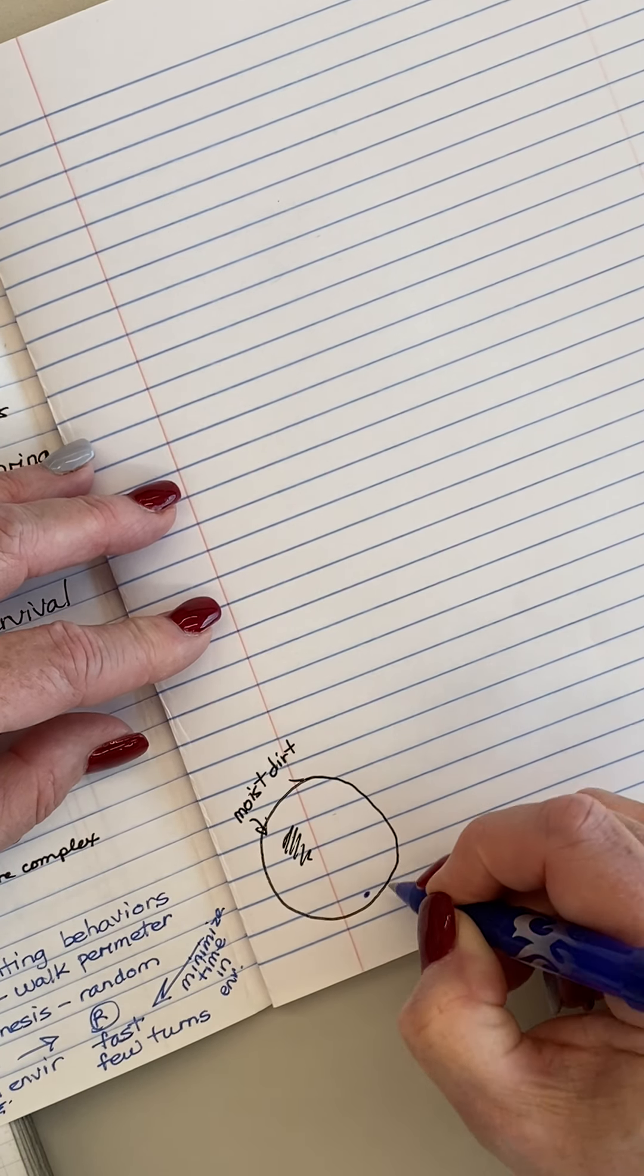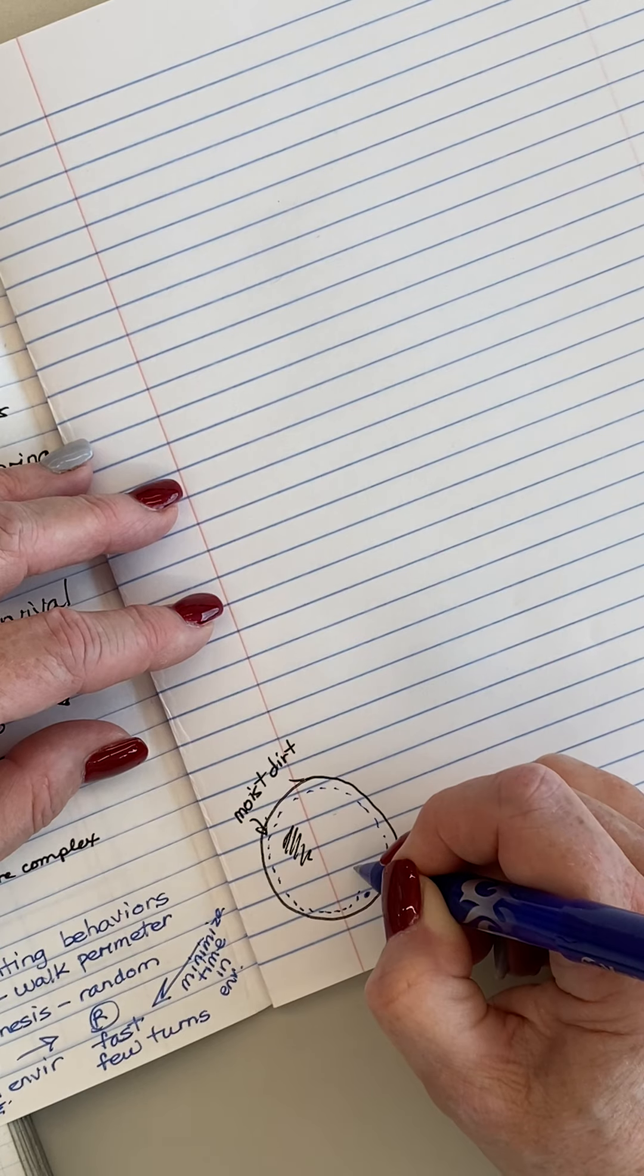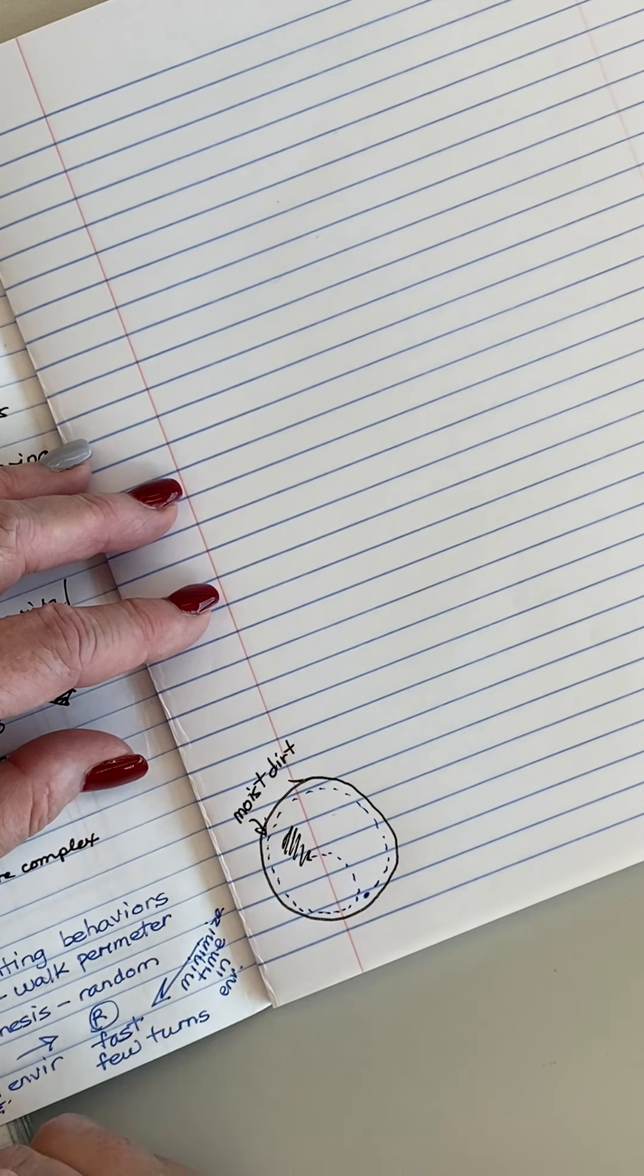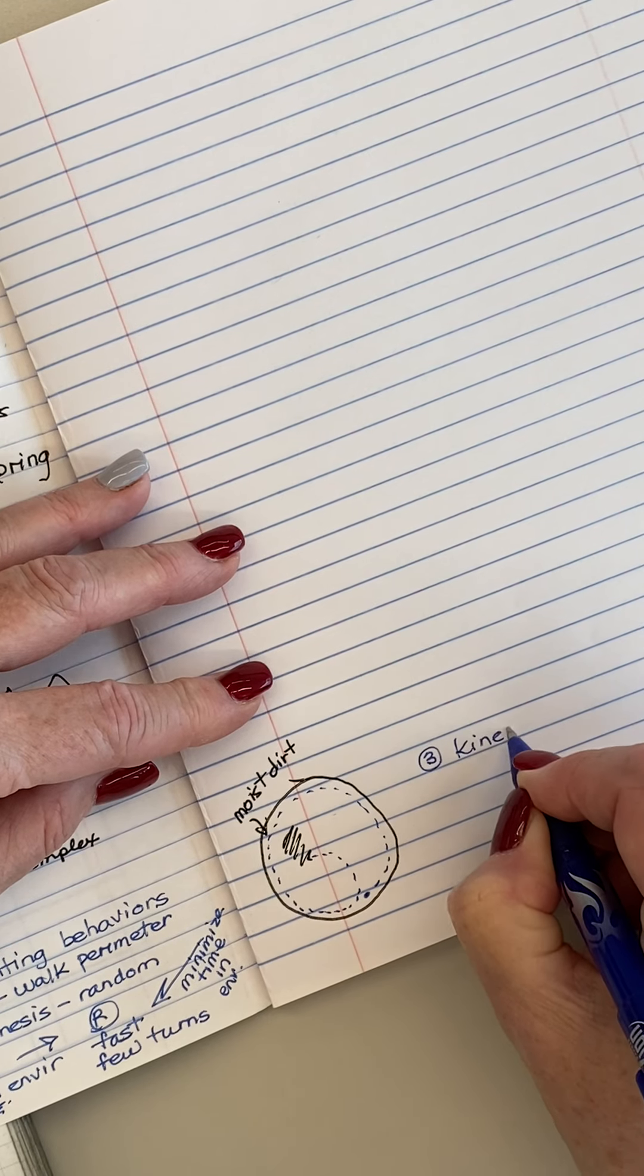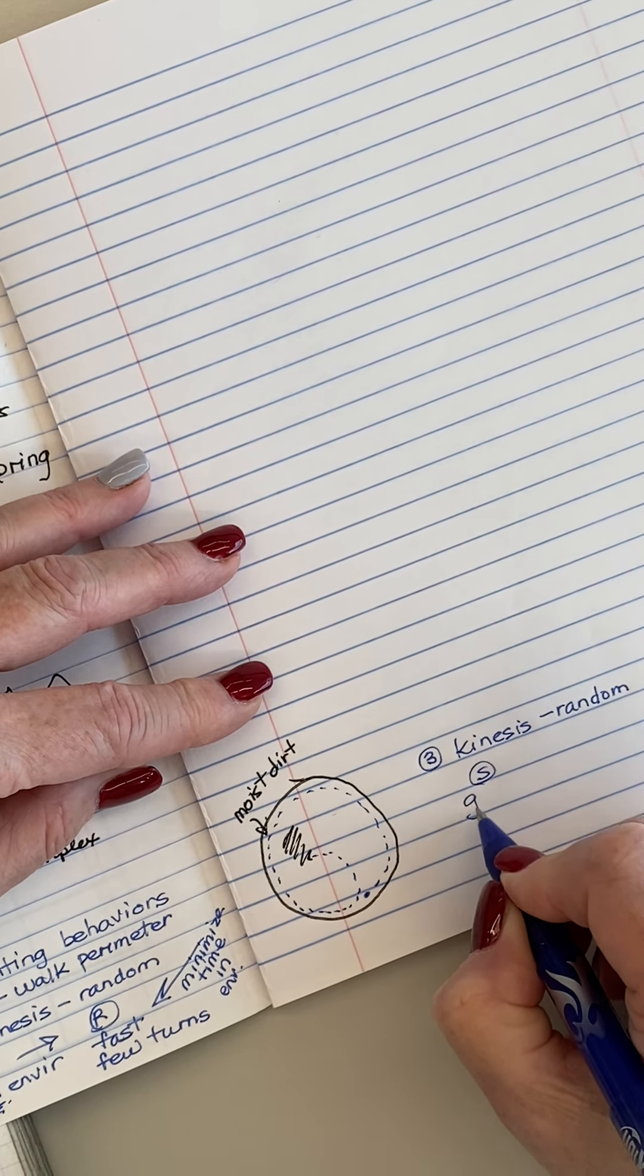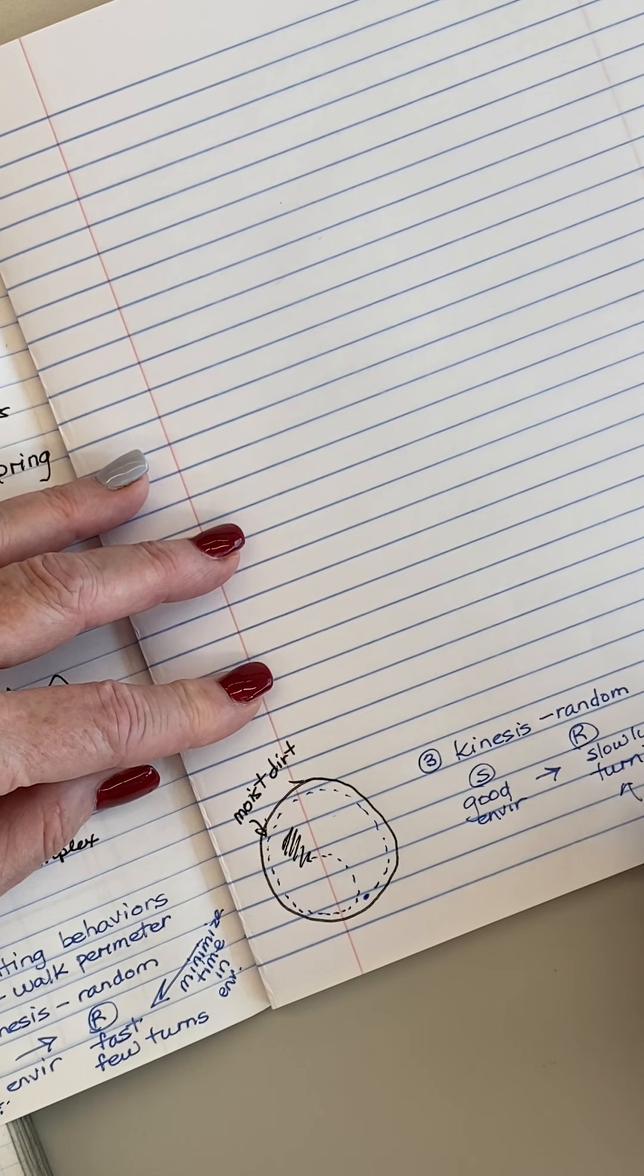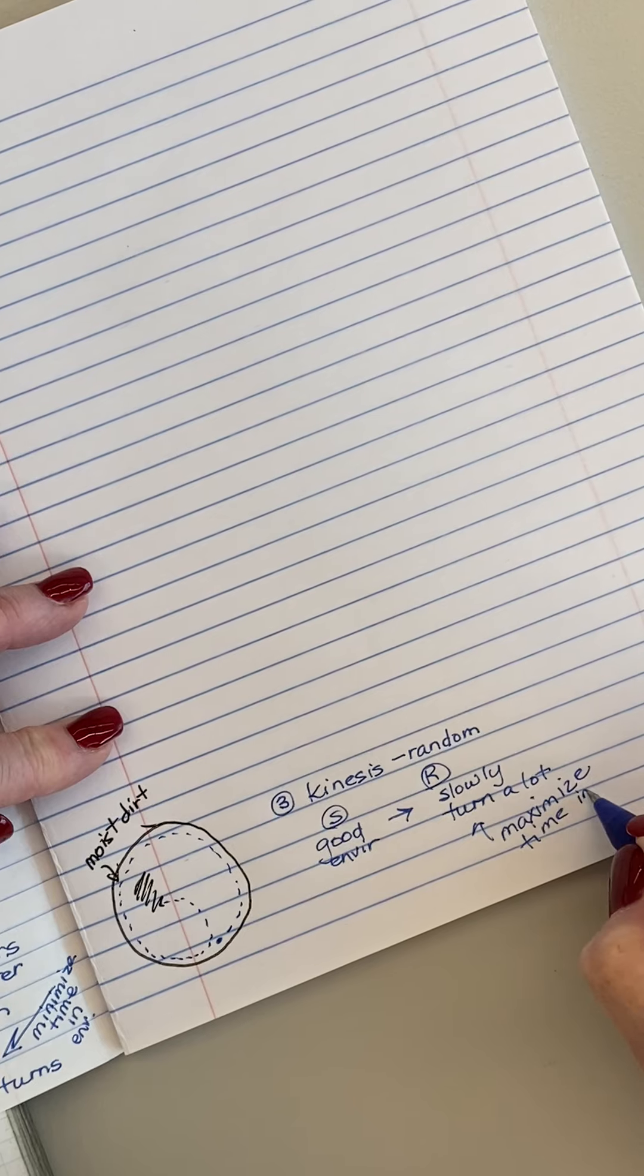So what that looks like is this. So this pill bug perceives, let's say, everything except the moist dirt is perceived as a bad environment. So all in this area, you're going to be able to track the pill bug moving quickly and making few turns. So this is an example of kinesis in a bad environment. So now I'm going to move over to my other side. Put my moist dirt back. Let me make sure we can see that. Okay. So put the pill bug in again, orients itself to its surroundings and it's going to over in this area perceive this as not favorable.